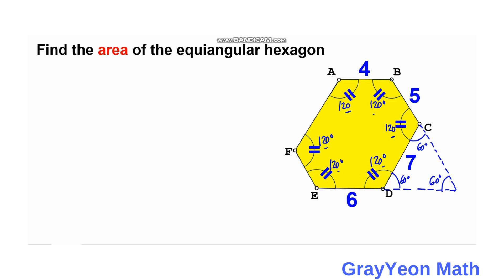Using the same procedure for segment AB, we continue from point B and from point A. We actually form an equilateral triangle: this angle is 60°, this is 60°, and this is 60°. So this side is 4, and this segment is also 4.